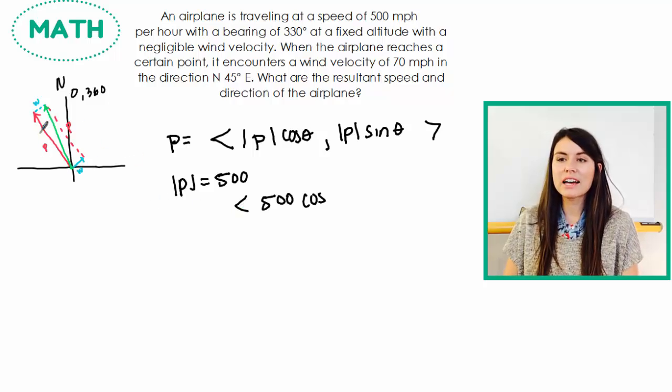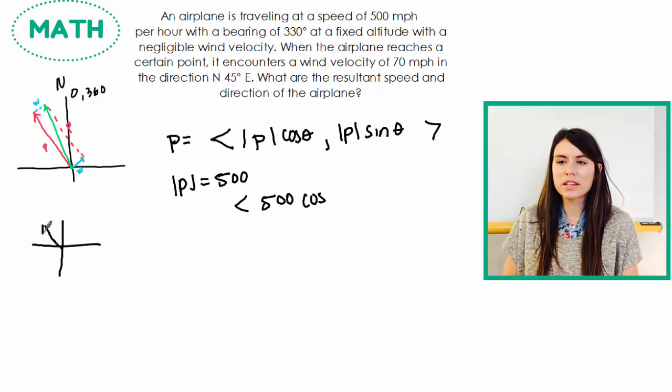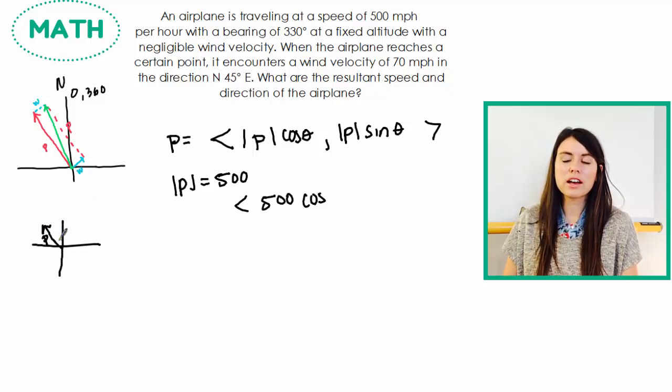So you have to look at the circle you were given and try and figure out what the angle of that airplane is on the unit circle. So we know it has a bearing of 330 degrees. So we need to figure out if we go this direction, the unit circle direction, because that's the direction you go on the unit circle. This is zero on the unit circle. If we go this direction, what is that angle?